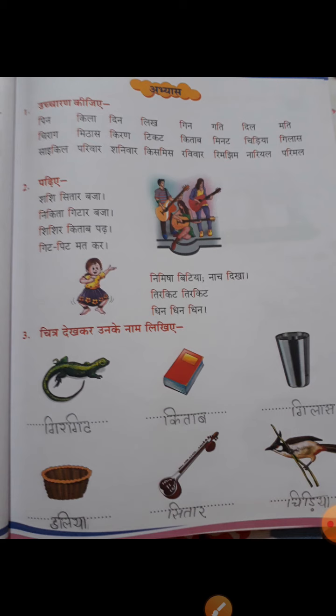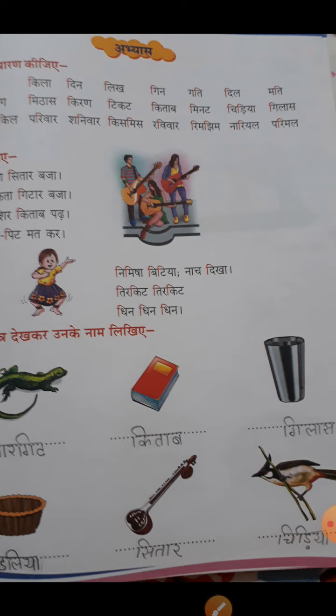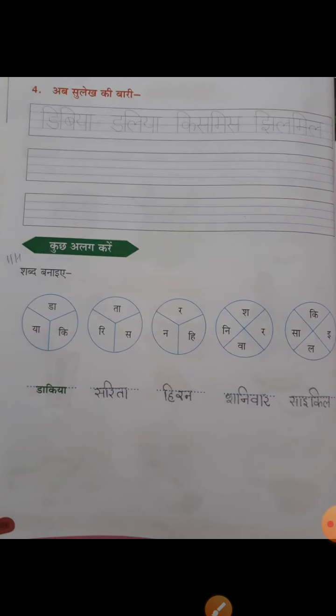Now the third section — look at the pictures and read the names. The first picture is GIT. Page number 24: the second is KITAB, third is GILAZ. Then DALIA, then SITAR, and the last one is CHIDIA.